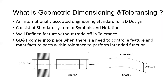GD&T stands for Geometric Dimensioning and Tolerancing. It is a universally accepted standard for dimensioning and tolerancing of 3D design parts. In GD&T, you use predefined symbols and notations. The main reason we use these symbols is to make sure the part is set to function — their use is based on the function of the part or the relative function of the part in relation to another part.